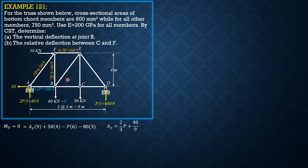Proceed to joint B, summation of forces Y equals 0, to solve for the force in member BE: 5P over 12 minus 50 over 9. Then summation of forces X at joint B gives SBC equals P over 4 plus 170 over 3. Since summation of forces X gives SBC equal to SCD, member CD is also P over 4 plus 170 over 3. Summation of forces Y at C obviously gives 80.